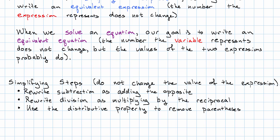We can use the distributive property to remove parentheses. Obviously, that's the distributive property at work. And finally, we can reorder terms and combine like terms. Reordering terms, that's the commutative property at work, and combining like terms is the distributive property at work again.